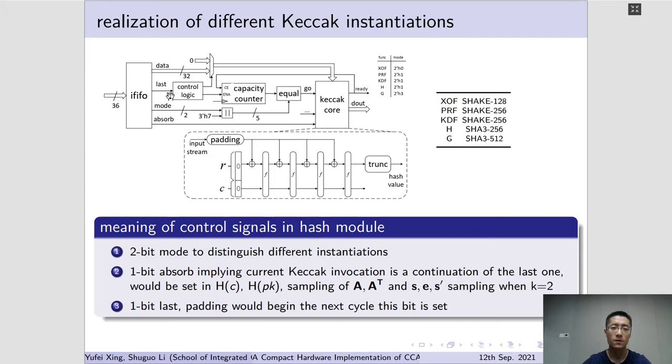The appending process would begin the next cycle when 1-bit pulse signal is active, counting from 0 until capacity counter equals the end, determined by mode signal. Then the Keccak core would begin to process data and generate output bits after 24 rounds of Keccak function. The absorb signal is active when Keccak core should work in sponge mode, or in other words, the output data from last invocation should be exclusive OR with input data in current invocation.